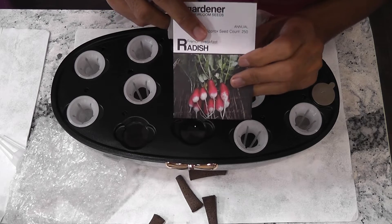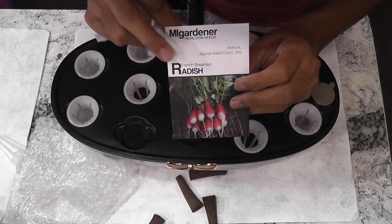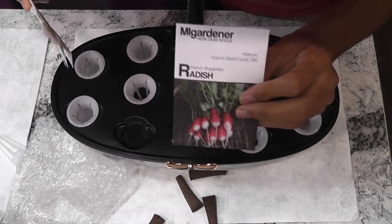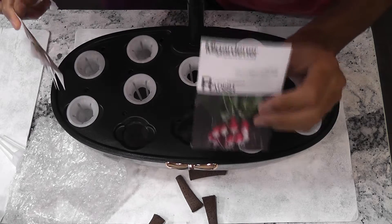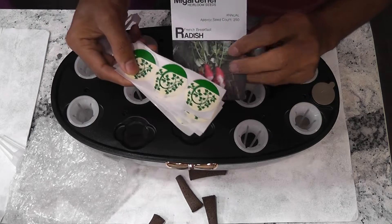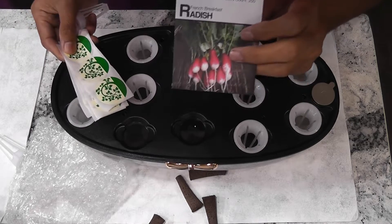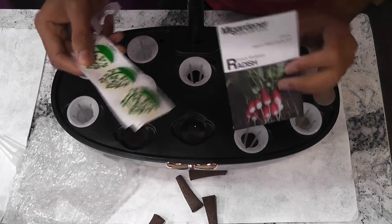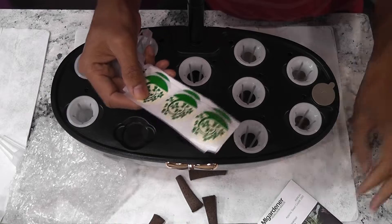If everything goes well I will be able to start harvesting radishes from day 20 and within 25 days these radishes will fully mature. Normally I don't use stickers for short crops like radishes but to test this system end to end I am going to use stickers as well.